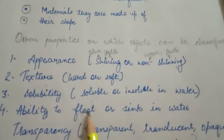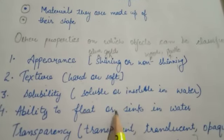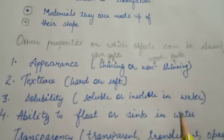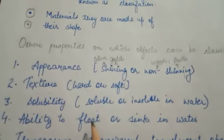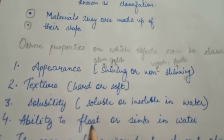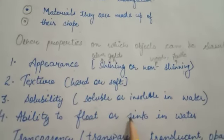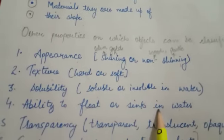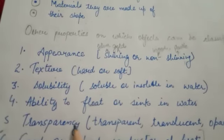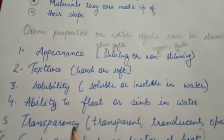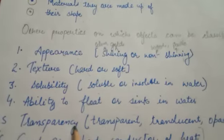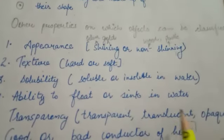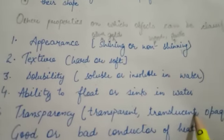The fourth one is the ability to float or sink in water. Like wood floats in water, but stones sink in water. The fifth is transparency — ki joh aapka material hai, woh transparent hai, translucent hai, ya phir opaque hai.